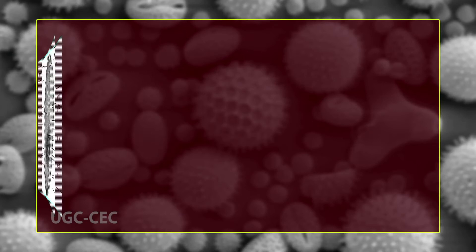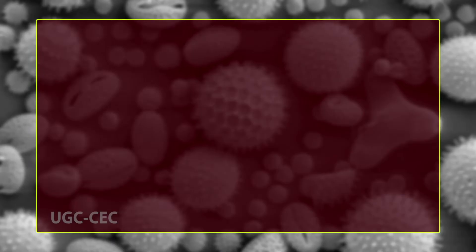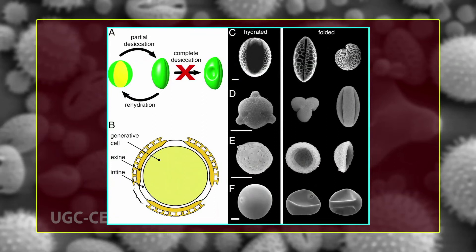The above layers of exine are clearly visible under an electron microscope. When observed under a light microscope, the inner layer known as nexine includes endexine plus the foot layer of ektexine. The upper layers consisting of columellae, tectum, and supra-tectal sculpturing constitute the sexine.